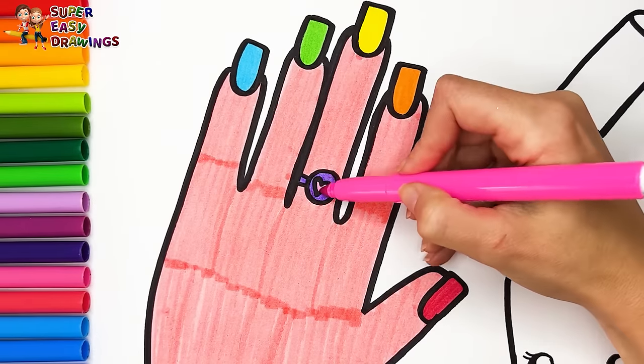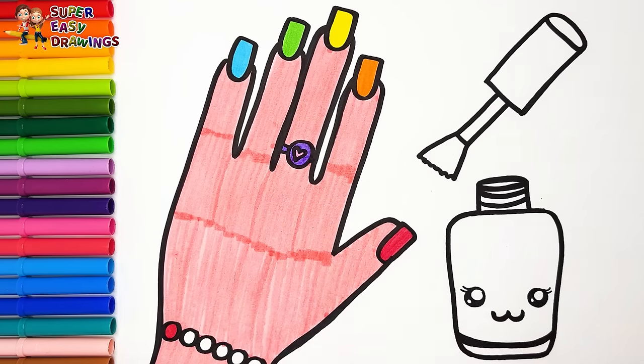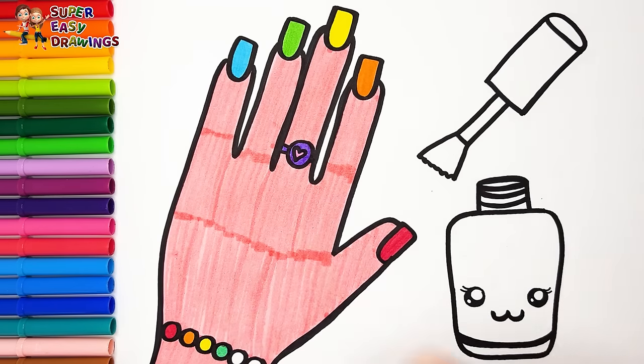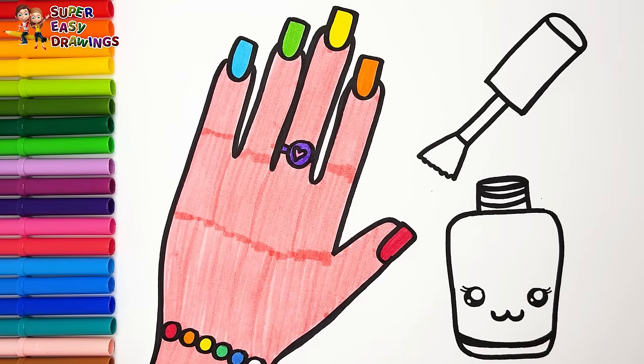And pink. I continue with the pearls of the bracelet. Red, orange, yellow, then light green, light blue.